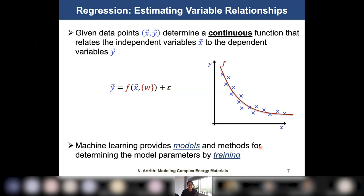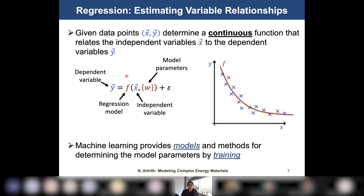For basic machine learning regression, we start with feature-level x, y data points and want to fit a continuous function to the data. We want to determine the function that relates x to y. You are probably familiar with linear regression — mathematically, regression can be expressed as an equation where y is the dependent variable, the regression model is the function, and the independent variable and model parameters are also included. An additional important term is the residual error. Machine learning provides models and ways to determine model parameters by training.